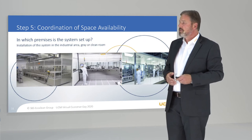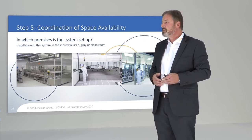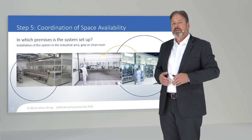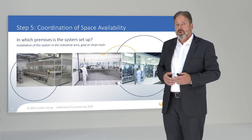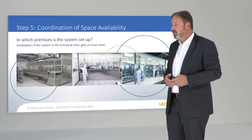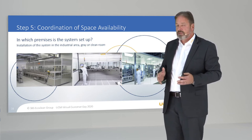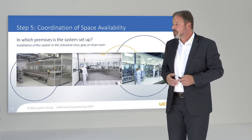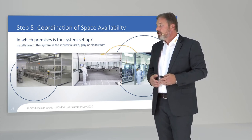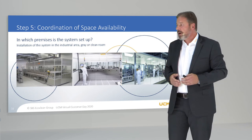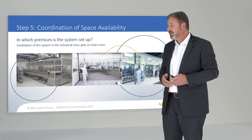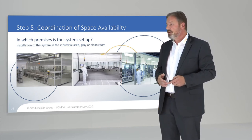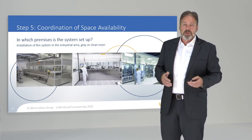The next step is coordination of space availability. We need to know if you want to install the system in an industrial area, in a gray room, or inside a clean room area. As a further necessity, a system layout must be created in advance to determine whether the available space and height is sufficient. If this is guaranteed, we can start the system configuration.